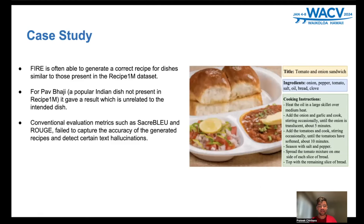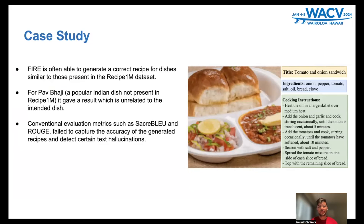This is the case study I want to share. In our study, FIRE consistently produces accurate recipes for dishes similar to those found in the Recipe1M dataset. However, when applied to pav bhaji, a popular dish in India that is not present in the Recipe1M dataset, it yielded irrelevant results. Conventional metrics like SacreBLEU and ROUGE provided inadequate results in capturing the accuracy of generated recipes, and they are also unable to detect certain text hallucinations.